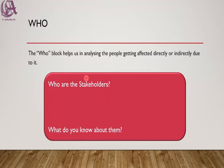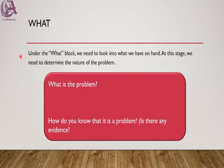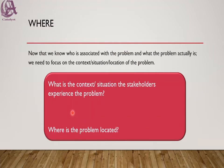After that we come to the What block. Under the What block, we need to look at what we have on hand. At this stage we need to determine the nature of the problem, and that can be determined with newspaper articles and media announcements. We have to find out these evidences and write them down. Then comes the Where block.